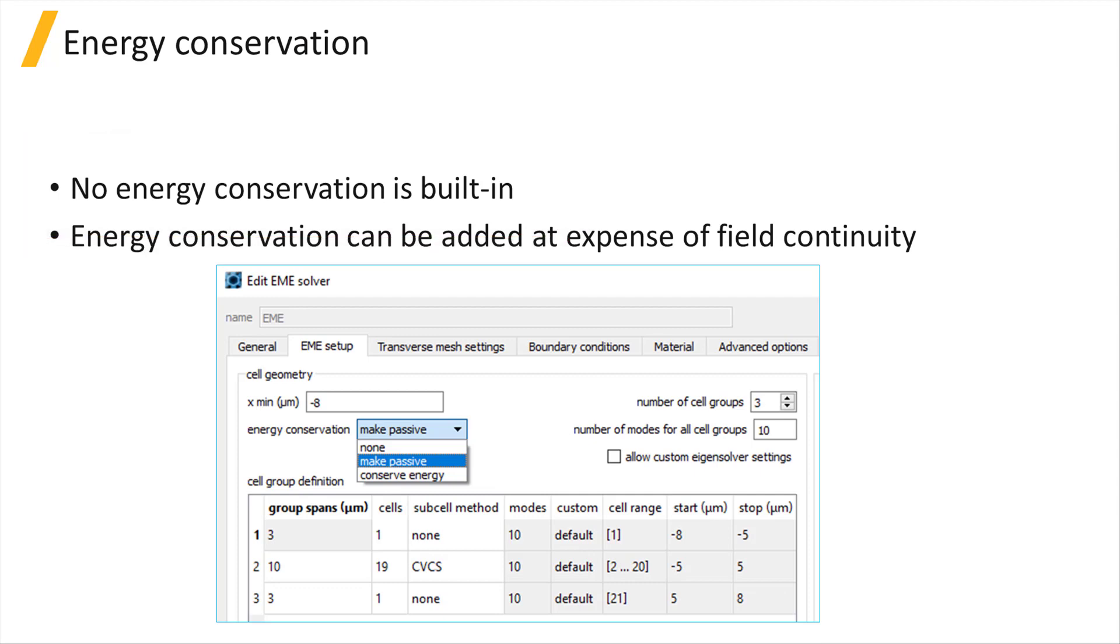Energy conservation is an additional constraint that can be added to ensure that energy is conserved. This may result in greater field discontinuities at the interface. So it's not possible to get everything—energy conservation and continuous tangential fields—because we have to work with a finite set of modes.